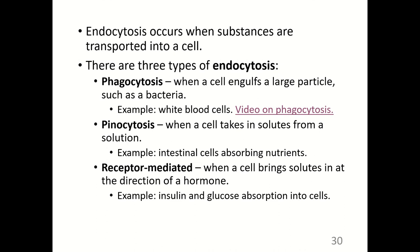The next type of endocytosis is pinocytosis, when a cell takes in solutes from a solution. An example is intestinal cells absorbing nutrients. When you digest food, it enters your intestines as chyme, which is acidic. The intestines neutralize it using the bicarbonate ion. As the chyme passes through the small intestine, the intestinal cells absorb digested nutrients through pinocytosis.